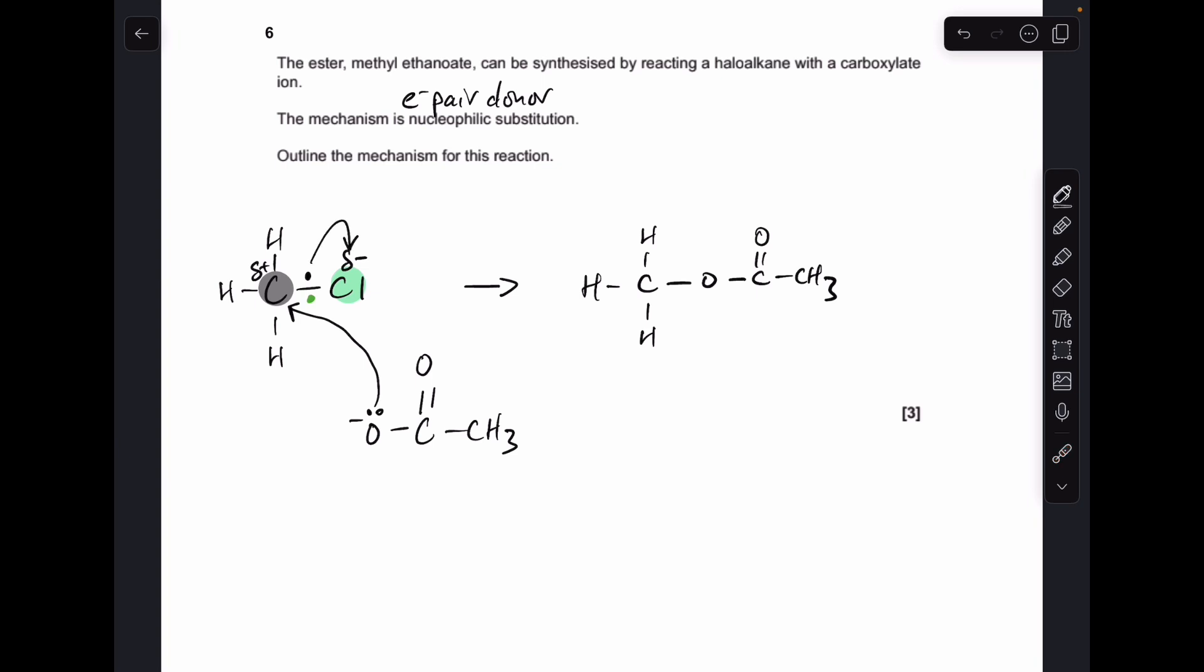to be repelled completely onto that chlorine. So the chlorine has effectively gained that black electron. It's become negatively charged, so we get a chloride ion there.